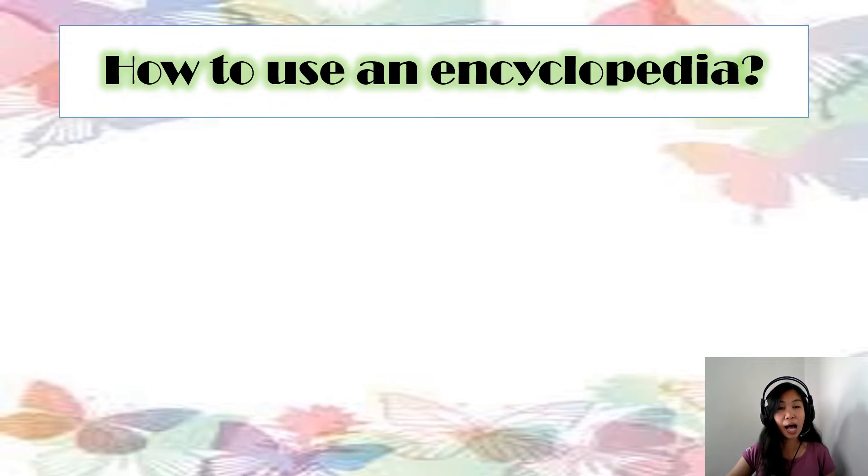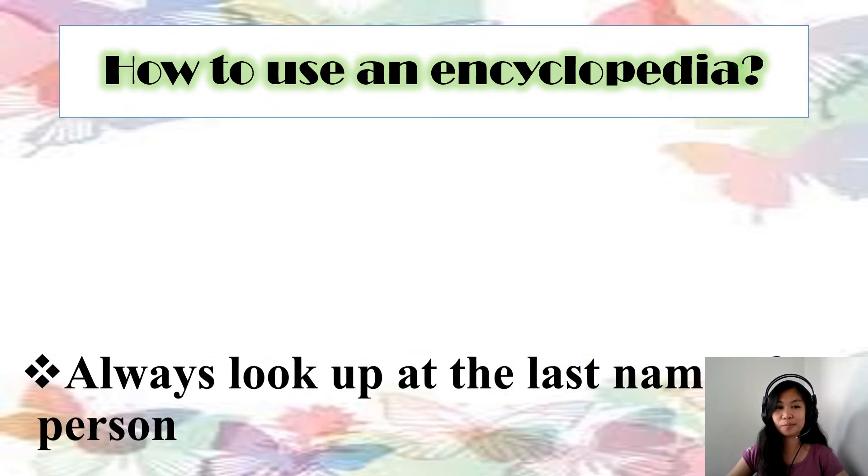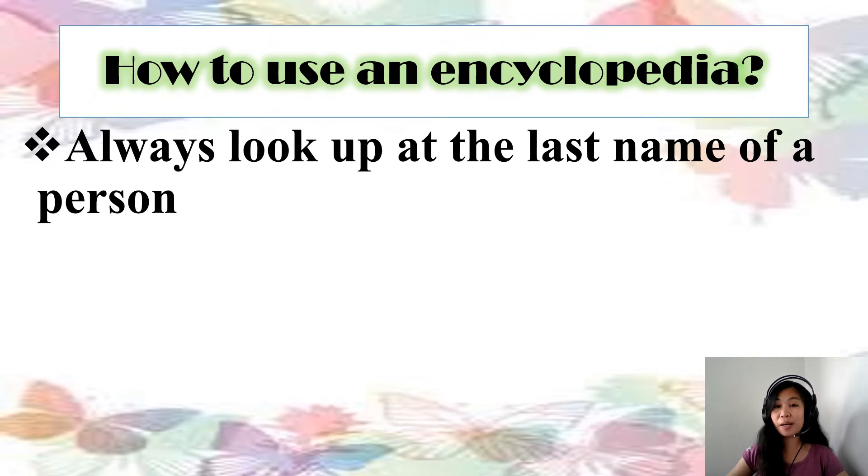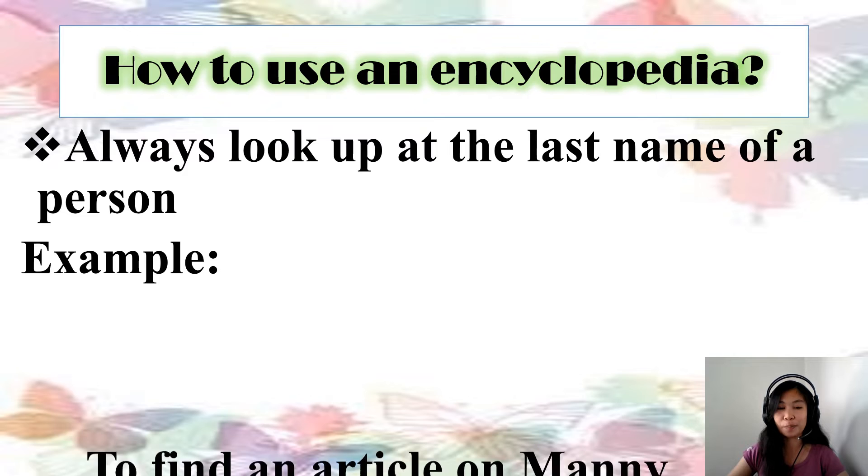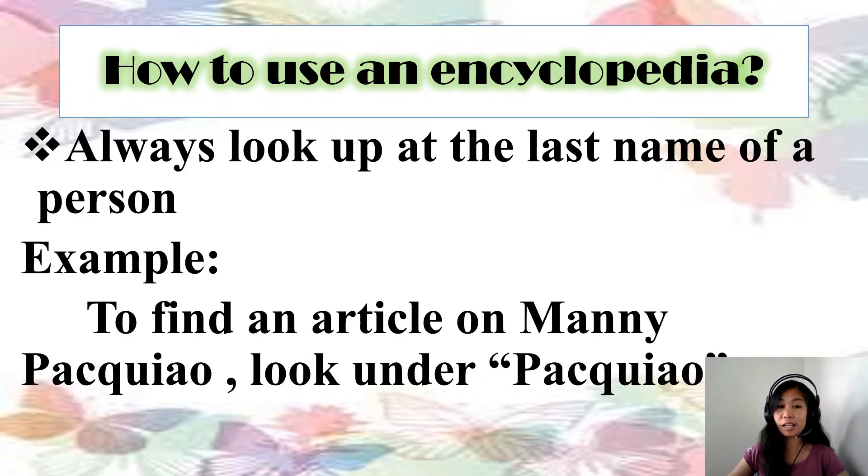Now how to use an encyclopedia? Always look up at the last name of a person if you're looking for an article or information about a certain person. Example, to find an article about Manny Pacquiao, look under Pacquiao or letter P.